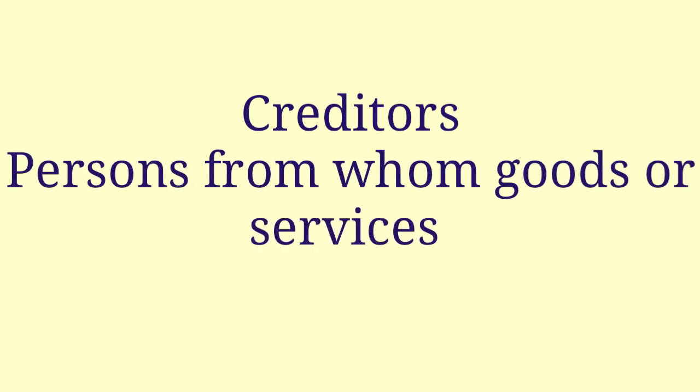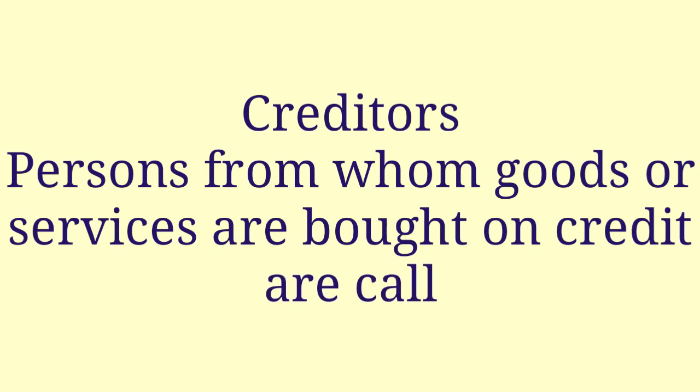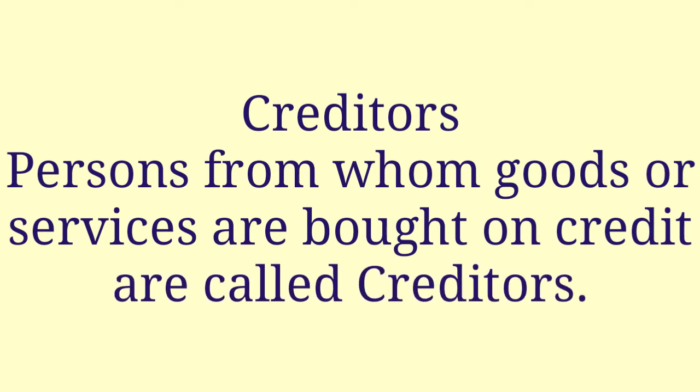The next accounting term is Creditors. Persons from whom goods or services are bought on credit are called creditors. For example, suppose an entity has purchased raw materials from three different suppliers: from Mr. X, Rs. 25,000 in cash; from Mr. Y, Rs. 15,000 on credit, out of which Rs. 10,000 has been paid; and from Mr. Z, Rs. 10,000 on credit, and nothing has yet been paid. In this case, the total amount of present creditors will be Mr. Y Rs. 5,000 and Mr. Z Rs. 10,000, so total will be Rs. 15,000.